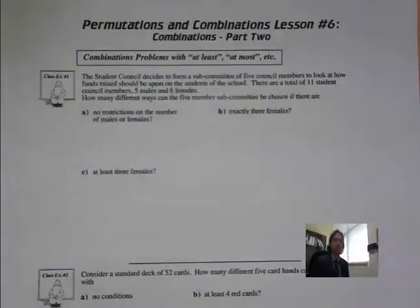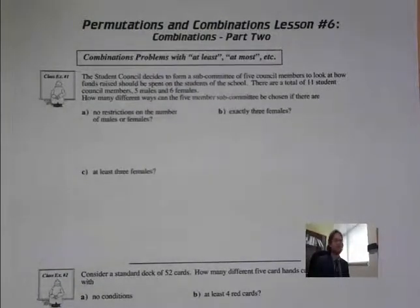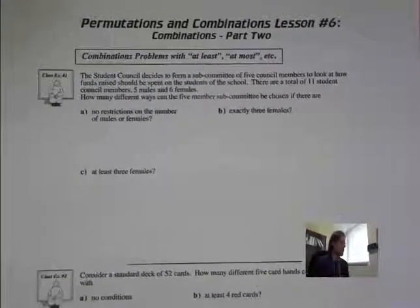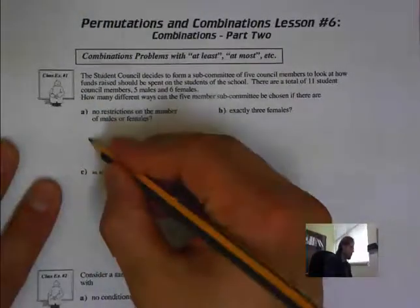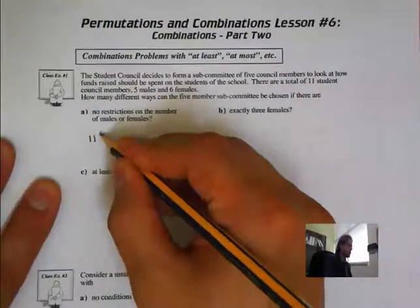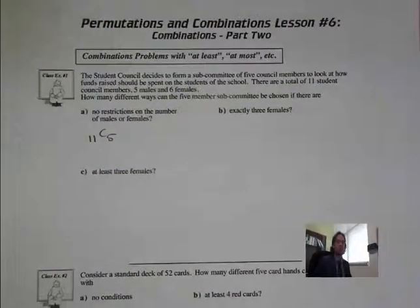To start off, our first question says: The Student Council decides to form a subcommittee of five council members to look at how funds raised should be spent on the students of the school. There are 11 total students — 5 males and 6 females. The first question says: no restrictions on the number of males or females. If there's no restrictions on either, that's pretty much any combination we could have. So out of the 11 students, we are choosing any 5. And that will give you your answer.